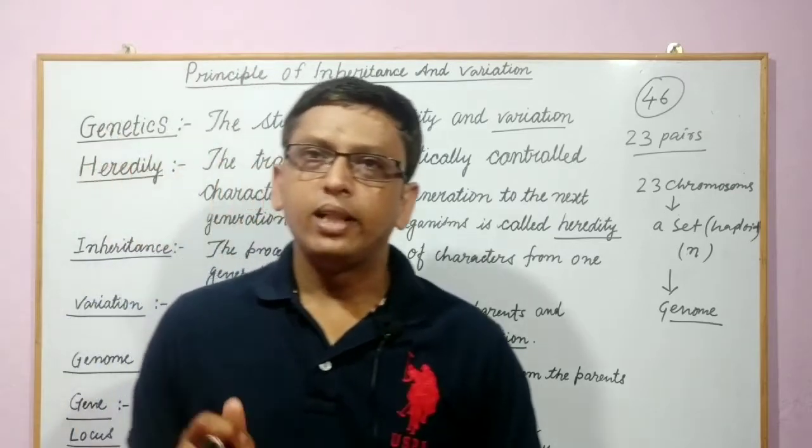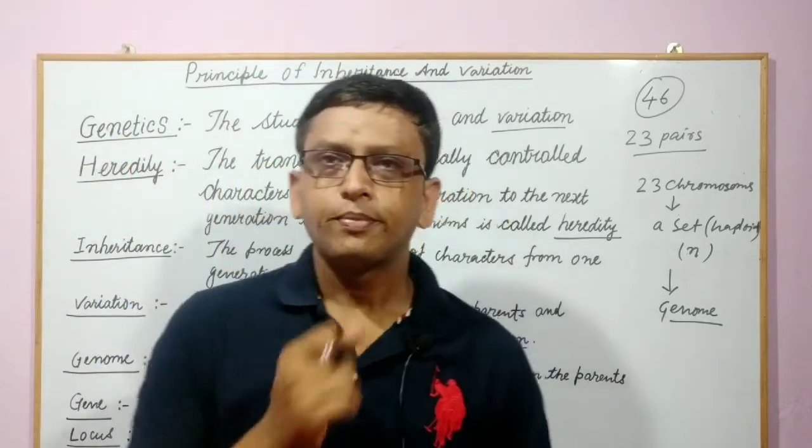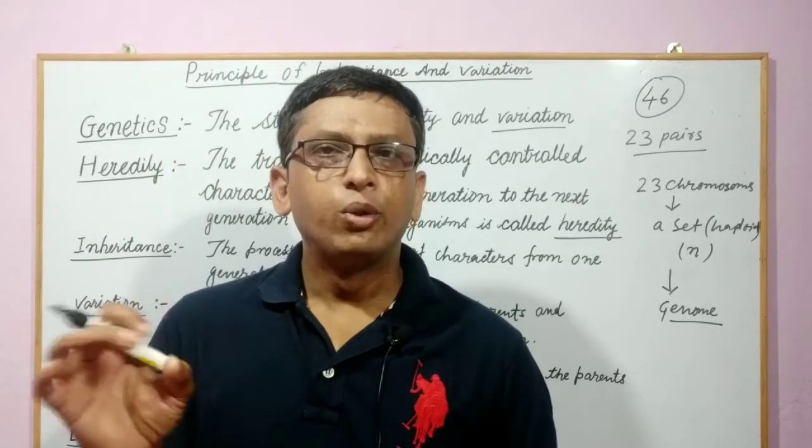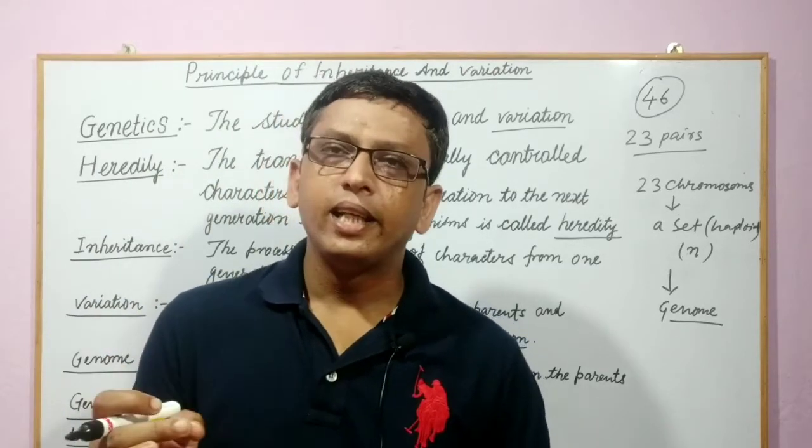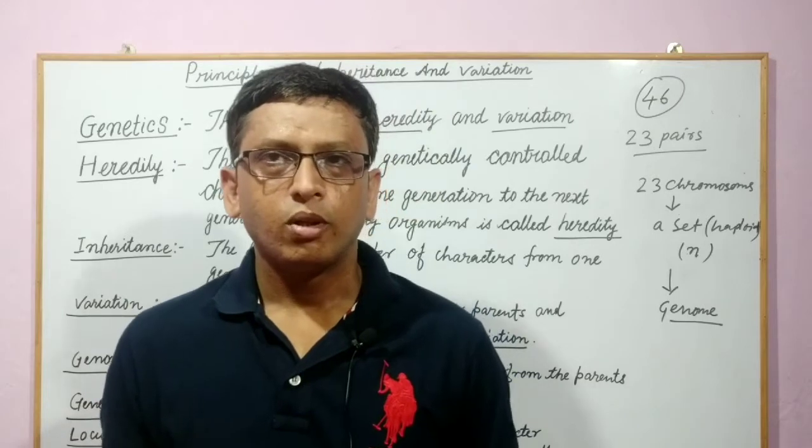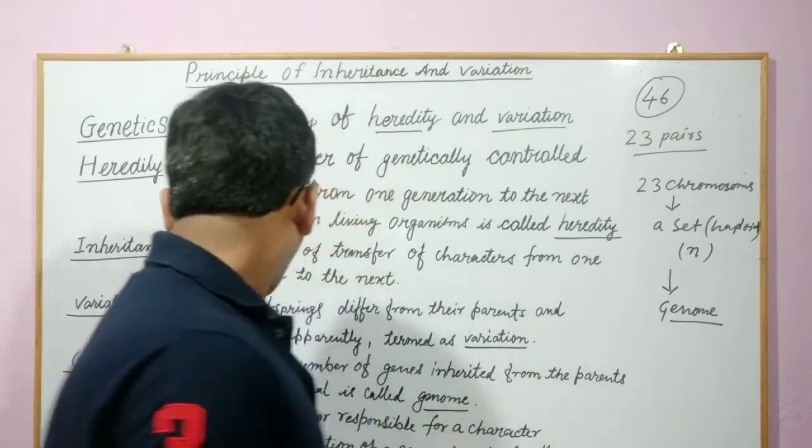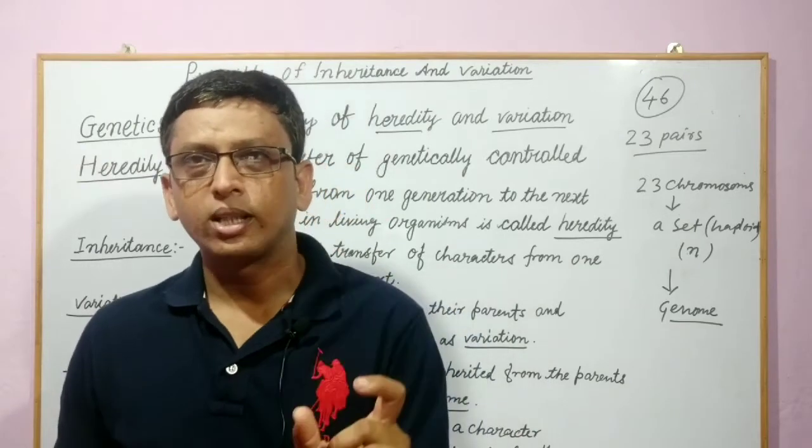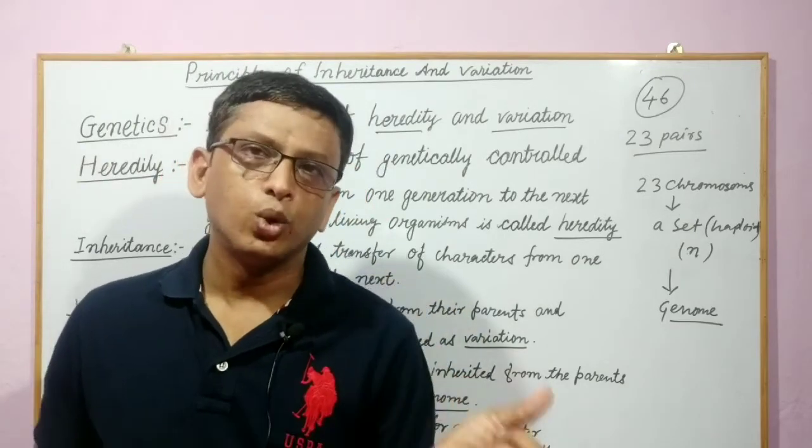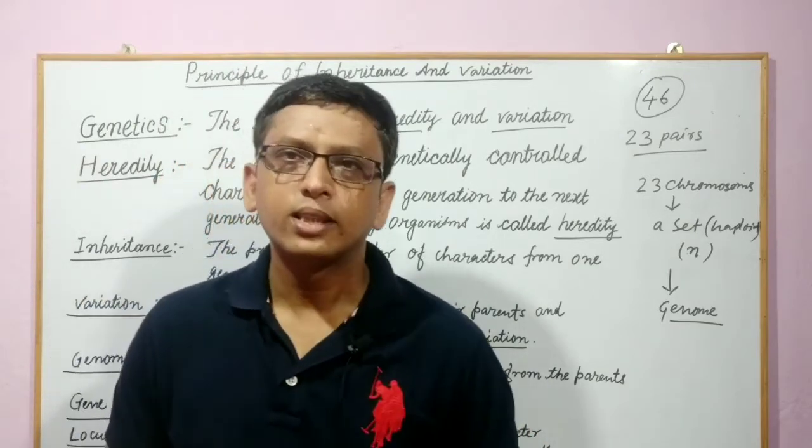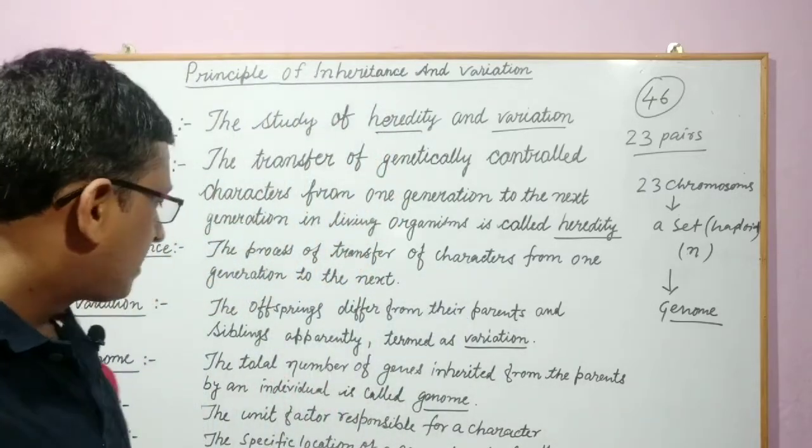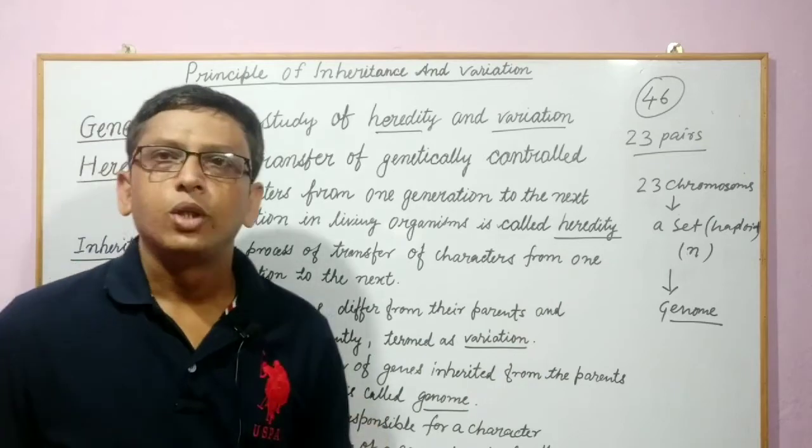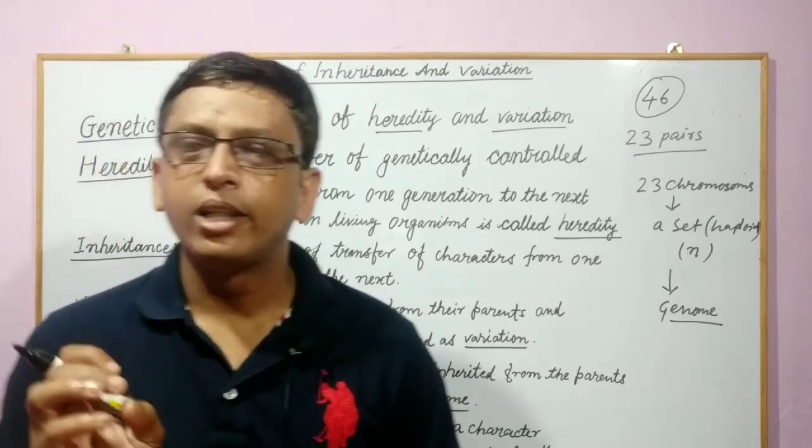We also know chemically the genes are specific sequences of nucleotides present in DNA in a chromosome. Now, what is locus? There is a singular term locus and plural is loci. So, what is a locus? It is the specific location of a gene along the length of a chromosome.